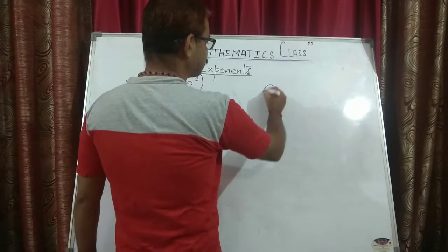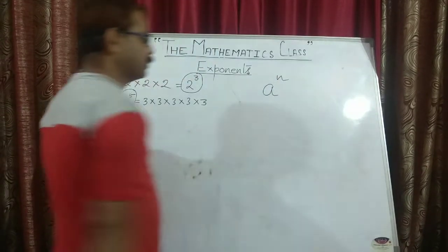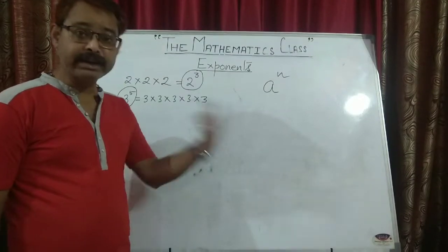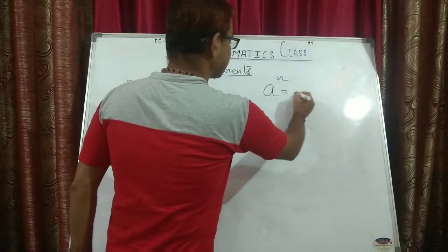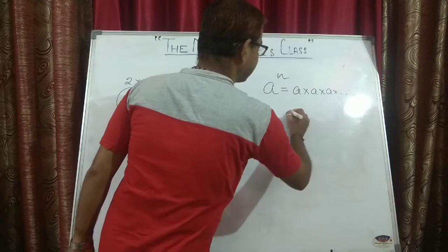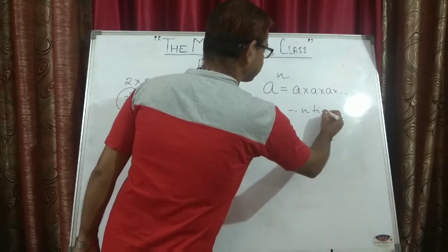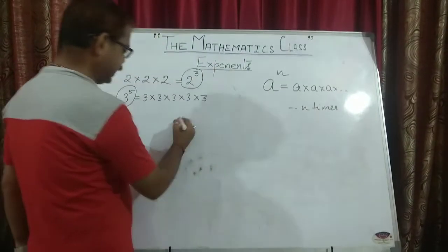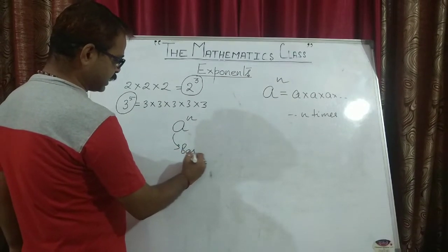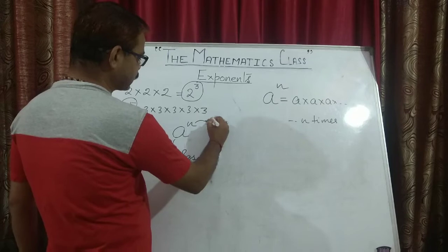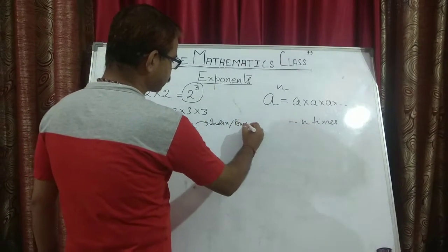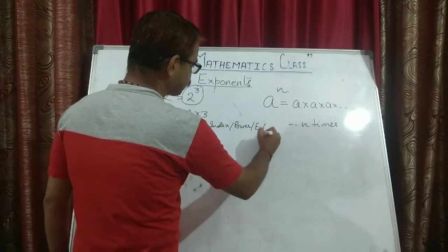Suppose I say a to the power n — it means a is multiplied to itself n times, which can be written as a into a into a, up to n times. Now in this expression a to the power n, a is known as base, and n is known as index, or sometimes we call it power or exponent.